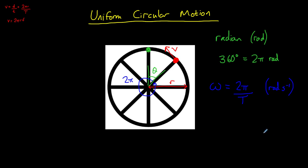And again, we know that frequency is 1 over T, so this can also be written as 2 pi f.